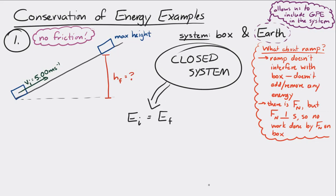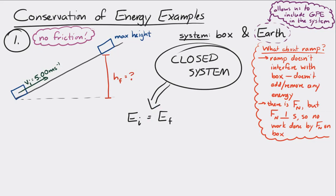We can say EI equals EF — the total energy at the beginning equals the total energy at the end. At the beginning, it only has kinetic energy. And at the end, at its maximum height, it's not moving. So at that moment, it only has gravitational potential energy.